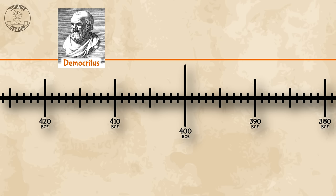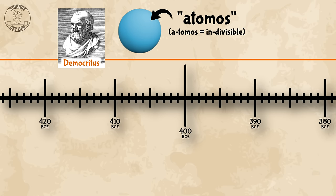We can't really understand where we are until we see where we've been. To the timeline! Debates about atoms have been going on since ancient Greece. Democritus first suggested that matter was made of tiny invisible bits. He called them atomos because he thought they were indivisible — this is why we call them atoms today.